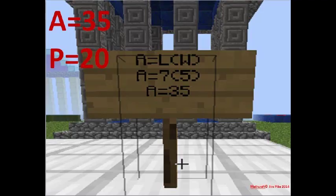Then after we build the area, we make our sign. They plug in the formula, they plug in the numbers, they plug in the answers. So now we know we have an area of 35 and a perimeter of 20.